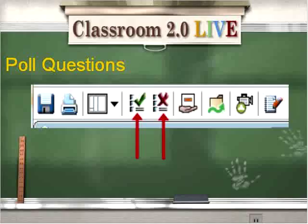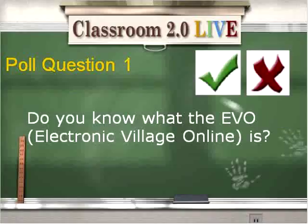We're going to go ahead and move forward now and talk about our polling questions. We're going to be using the green check and the red X in the top menu. Our first poll question is: do you know what the EVO — the Electronic Village Online — is? If you know, please click the green check. If you're not sure, click the red X. But by the end of today's session, I know that percentage will change.